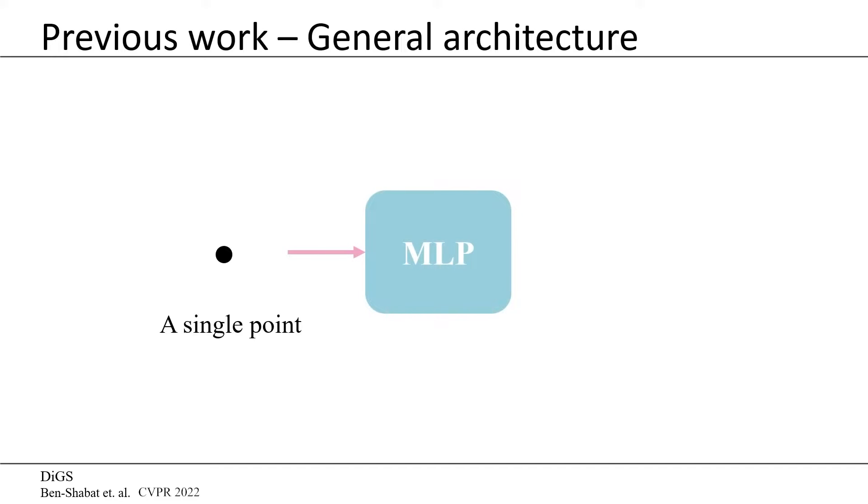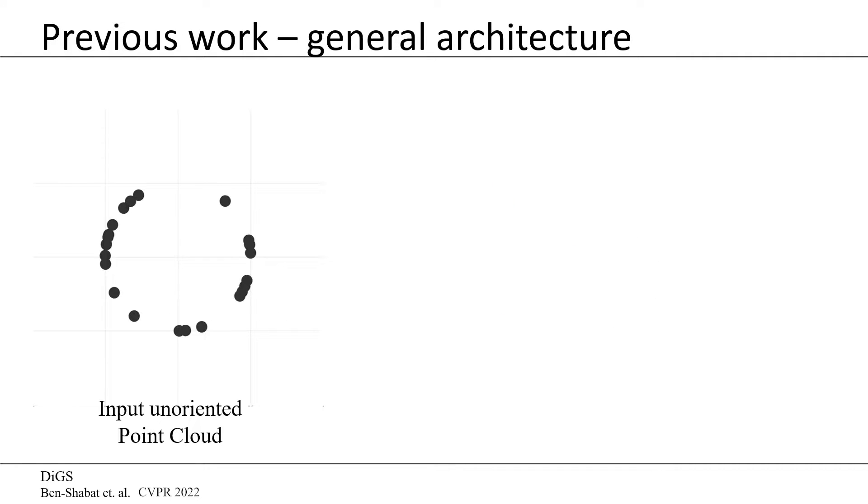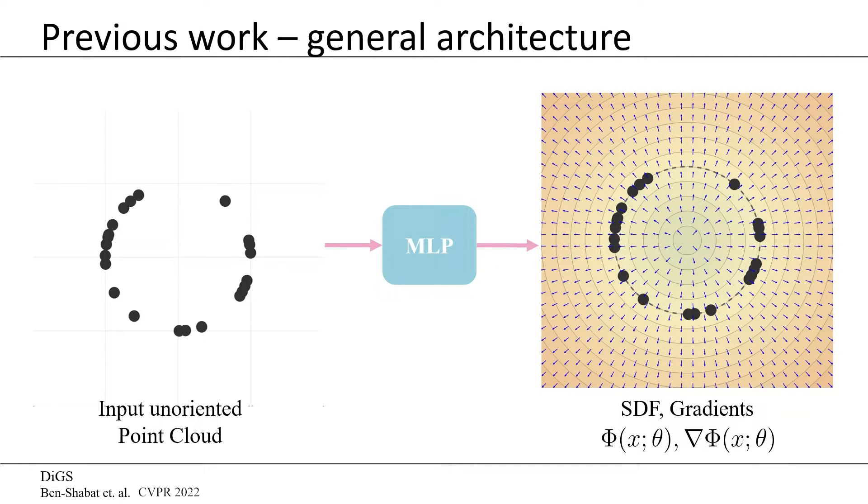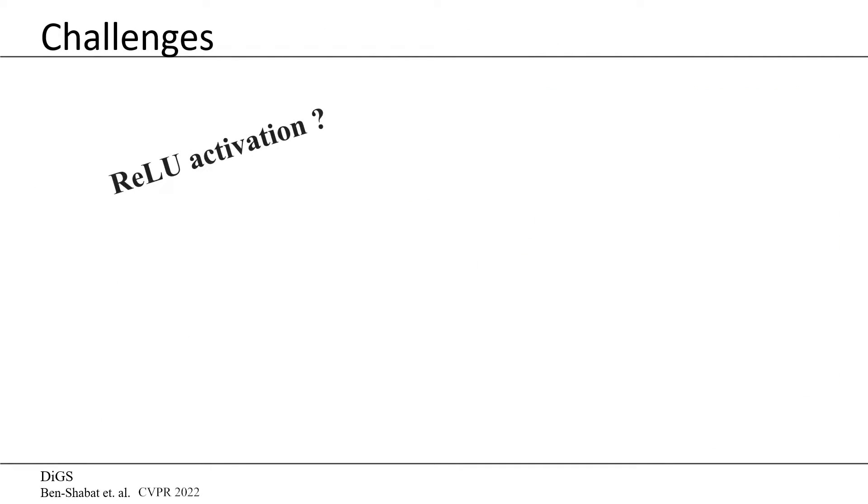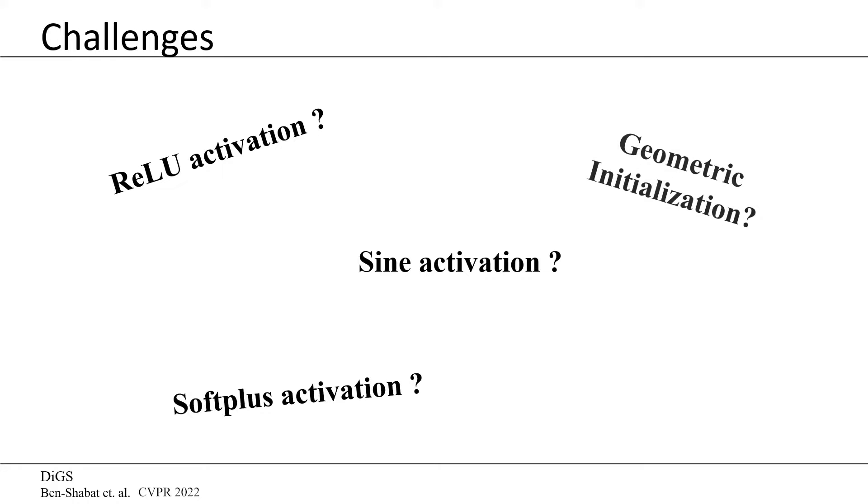Most recent work shares a similar architecture which feeds individual point coordinates into an MLP to predict its signed distance function. When training with a set of points, the output will look like this when evaluated over all points. Here, the colors represent different distance values at grid positions and the arrows the gradient direction. Most shaped neural implicit representations differ from each other in their choice of initialization and loss function as well as activation function.